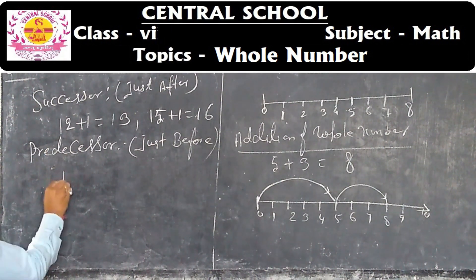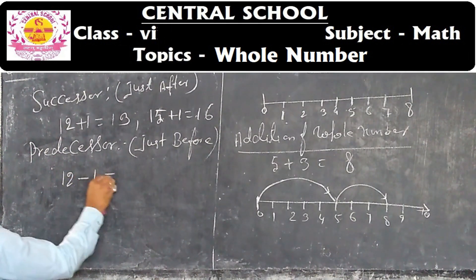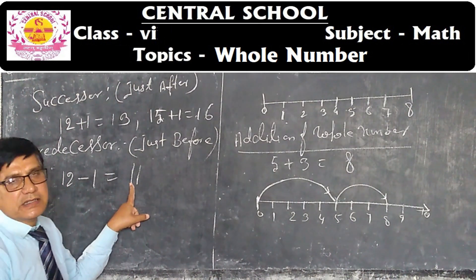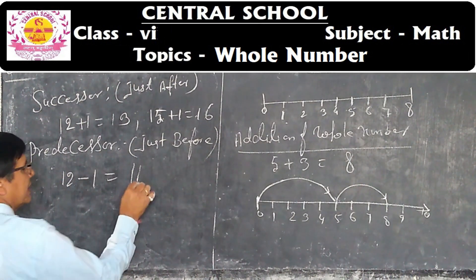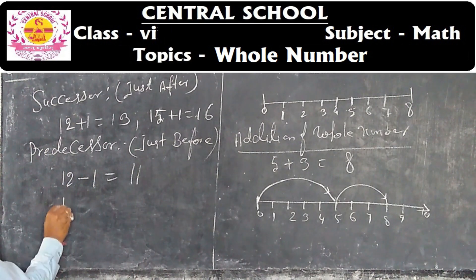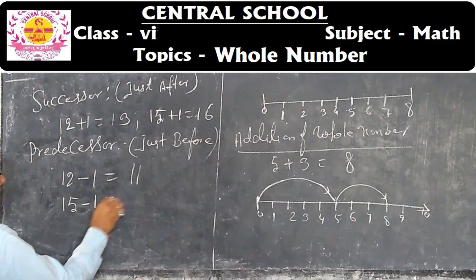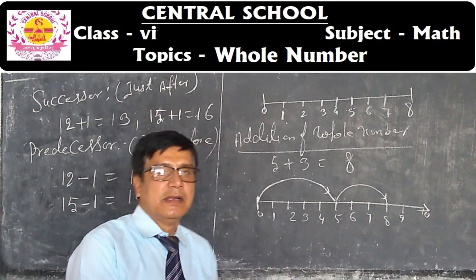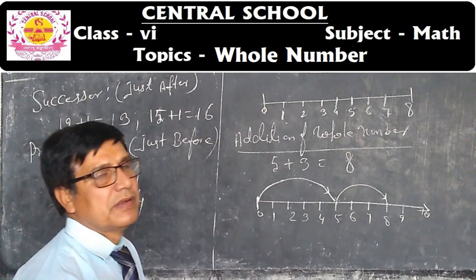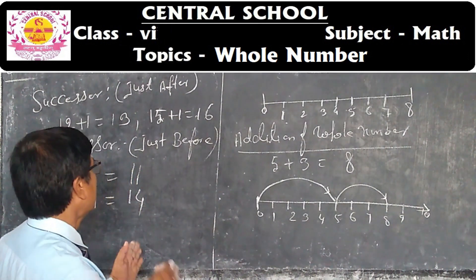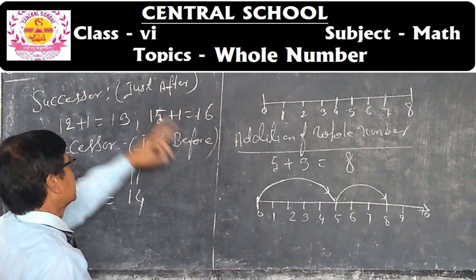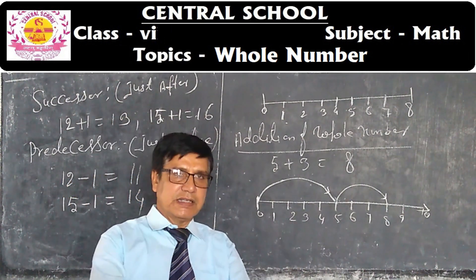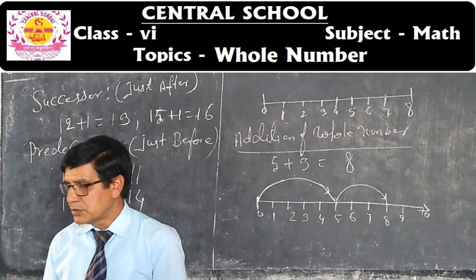The predecessor of 12 means minus 1: 11. So the predecessor of 12 is 11. Similarly, the predecessor of 15: 15 minus 1 is equal to 14. So 1 digit before is the predecessor and 1 digit after is the successor. That is what is successor and what is predecessor.